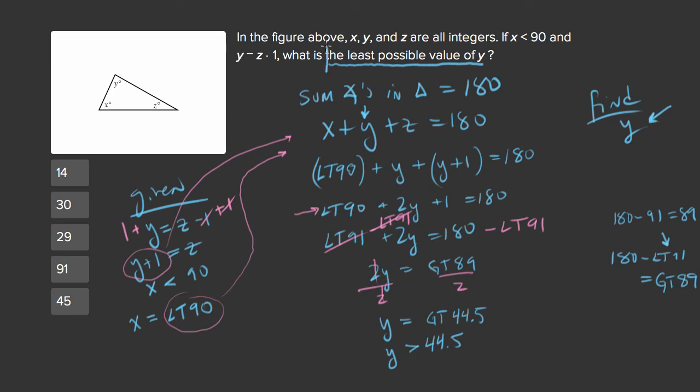And now let's come back to our charge, which is to find the least possible value of y. What is the smallest value of y which will satisfy that equation. And that is y equals 45, which is your answer.